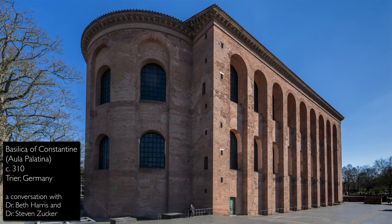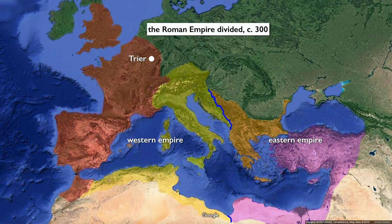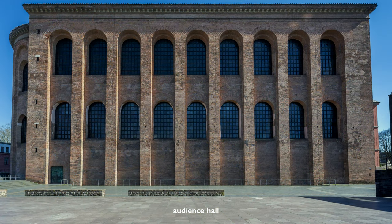We're in the city of Trier in Germany, looking at the monumental structure built by the ancient Roman Emperor Constantine in the early fourth century. An earlier Roman Emperor, Diocletian, divided the Roman Empire into four parts, but basically divided it into the Eastern and Western empires, and Trier became one of the capitals of this newly divided state. The building we're looking at is an audience hall that once formed part of Constantine's palace here in Trier.